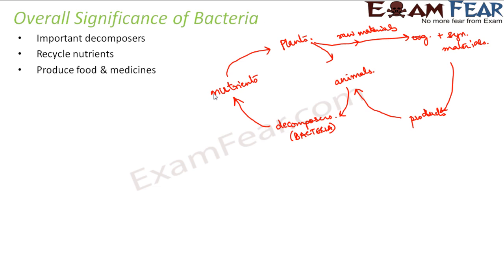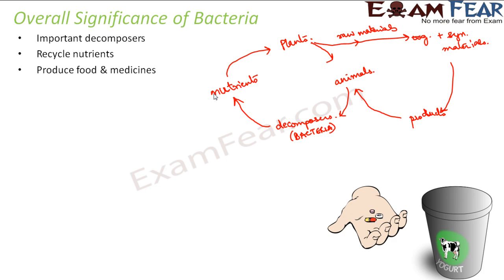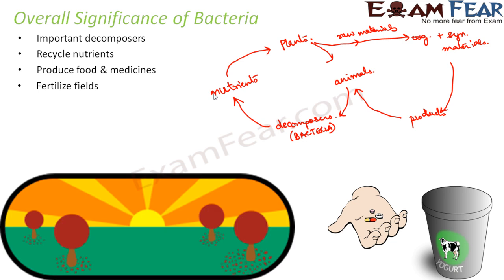Besides acting as decomposers, bacteria also help produce food and medicines. For example, the production of curd from milk happens with the help of Lactobacillus. Bacteria also help in fertilizing the fields — during decomposition they provide manure to the soil, which increases soil fertility. These are some of the very important roles played by bacteria for the benefit of our environment and all other living organisms.